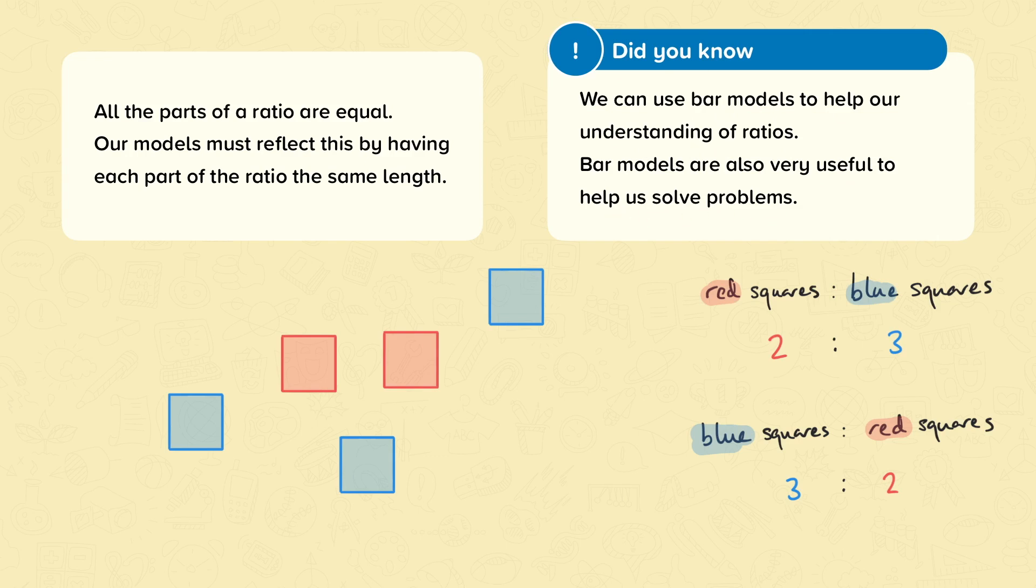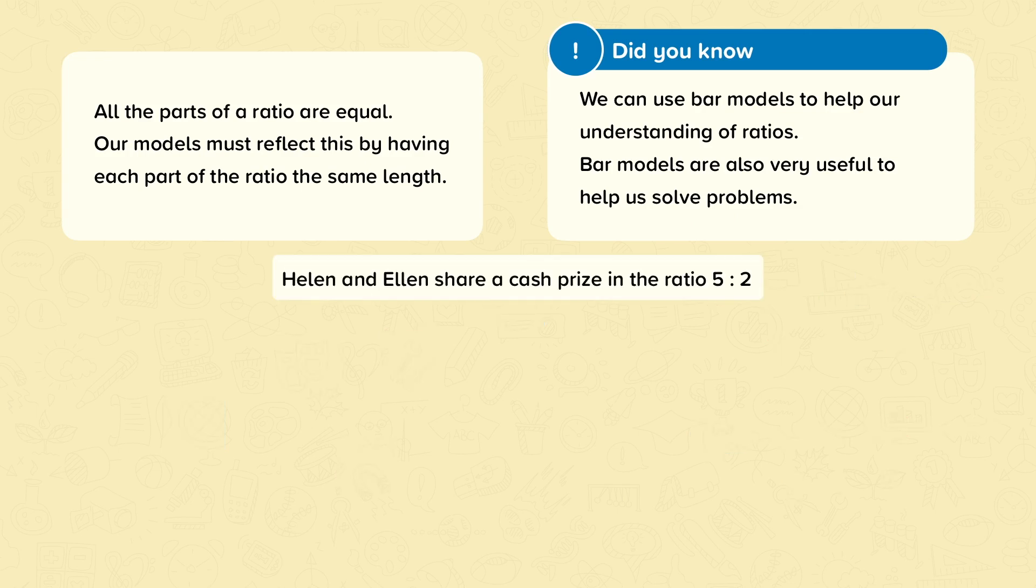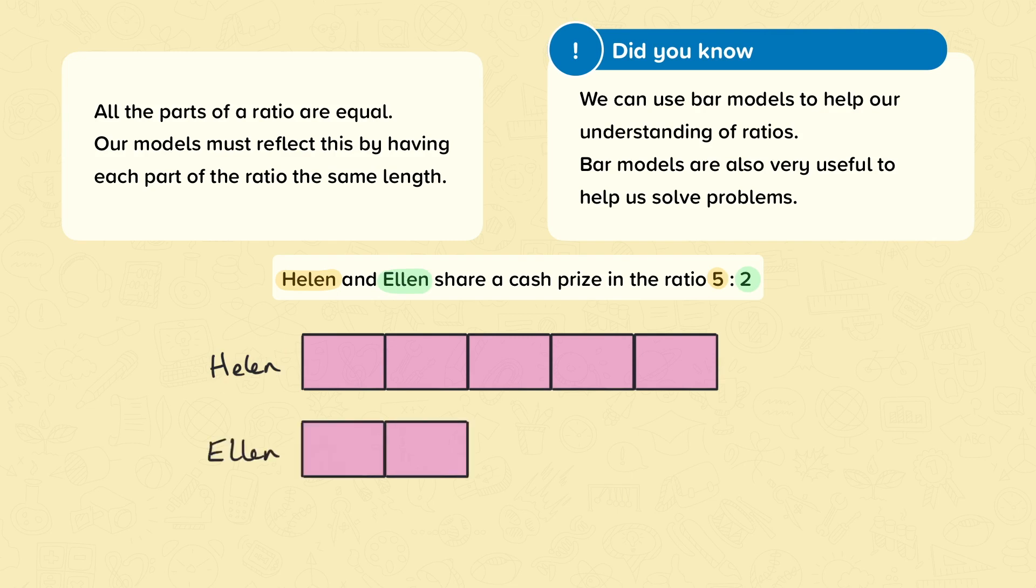Let's take a look at an example of bar modelling a ratio. Helen and Ellen share a cash prize in the ratio five to two. The order matters. Helen is first here, so she gets the first number in the ratio. Helen has five parts, so we draw five equal parts for Helen and label it. Now Ellen has two parts, so we draw two equal parts for her and label it. Notice that all the parts are exactly the same length and each one is labelled with the person.